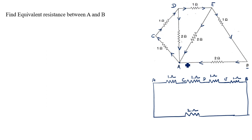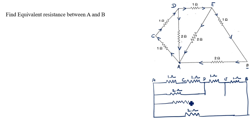Now we see that D joins with A, so we draw that resistor — 2 ohm. Also, E to A is joined, so E to A we draw 2 ohm as well.